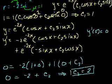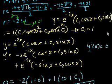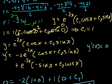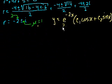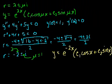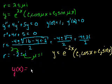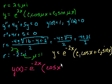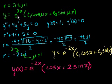We now have our particular solution. With c1 = 1 and c2 = 2, the particular solution is y(x) = e^(-2x)·(cos(x) + 2·sin(x)).